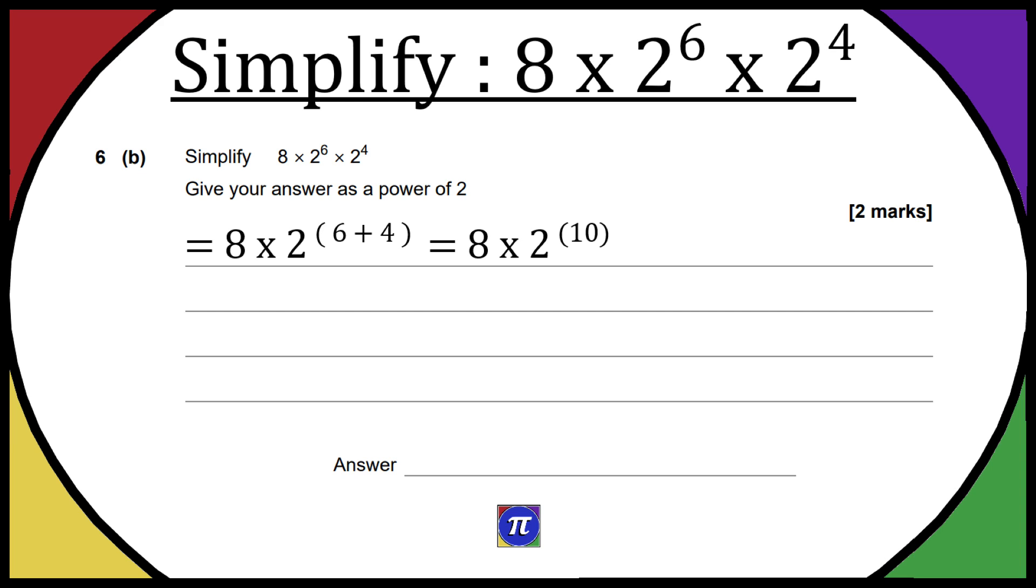So, next line, let's rewrite 8 times 2 to the power of 10, but we need to give our answer as a power of 2. So luckily, 8 can be written as 2 times 2 times 2, and then we're just going to times that by the 2 to the power of 10.